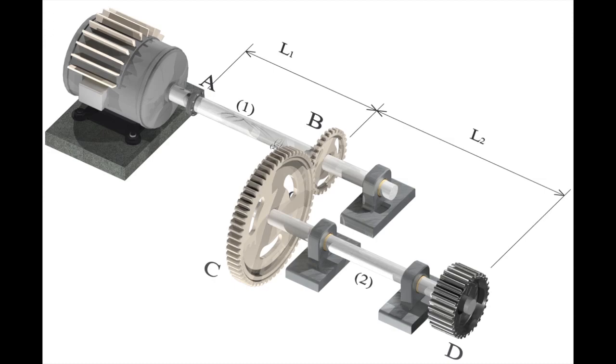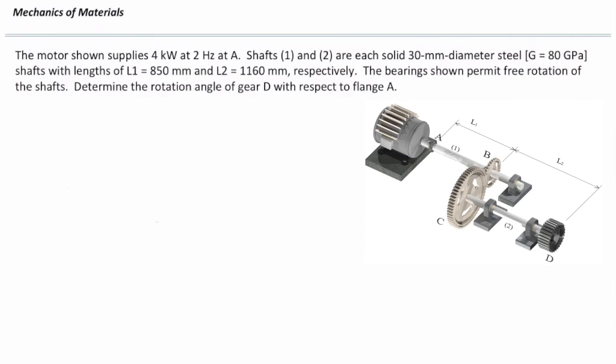I want to quickly solve a problem. The motor shown supplies 4 kW at 2 Hz. Shaft 1 and 2 are each solid 30 mm diameter. The length of the first shaft is 850, the length of the second shaft is 1160 mm. The bearing permits free rotation, as we expect to see in all torsional problems. Determine the rotation angle of gear D with respect to flange A. So we want to determine how much is the total twist at the right end. Similar to what we discussed, we need to determine torque in each element first.